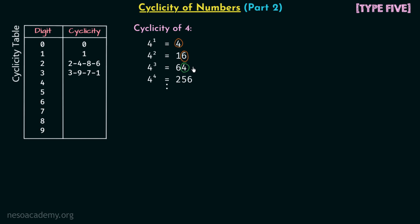After 6 we are again getting 4, so there is a repetition after 2 intervals, then we get 6. With increasing powers of 4, the unit place will have 4, 6, 4, 6, 4, 6, and so on. So the cyclicity of digit 4 is 4, 6.